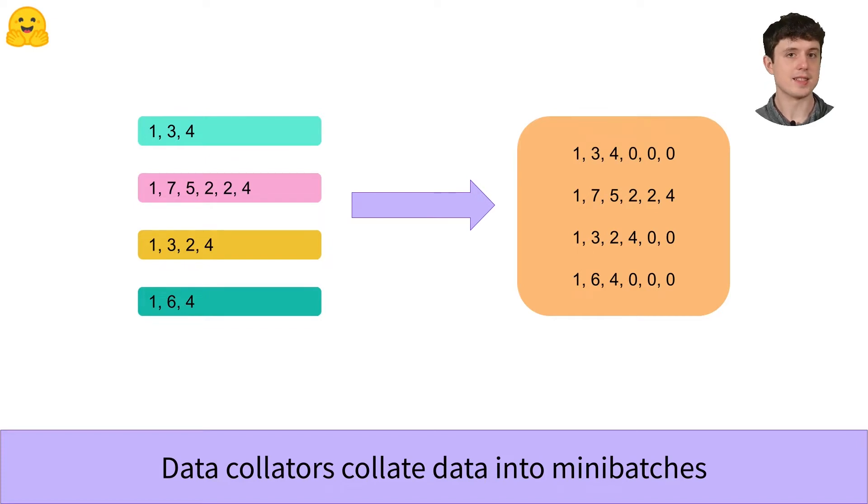For some tasks, the data collator can be very straightforward. For example, when you're doing sequence classification, all you really need from your data collator is that it pads your samples to the same length and concatenates them into a single tensor.